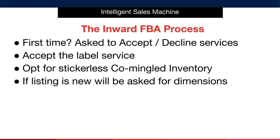First, you want to accept any label services, as this allows you to scale in the future if this service is ever required. You also want to select the option of stickerless commingled inventory. At this point you will likely have to enter the actual product dimensions of your item — have this to hand. Don't forget that it will be imperial inches in the USA and metric centimeters in Europe.